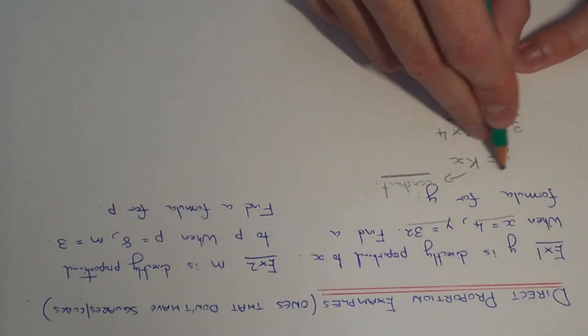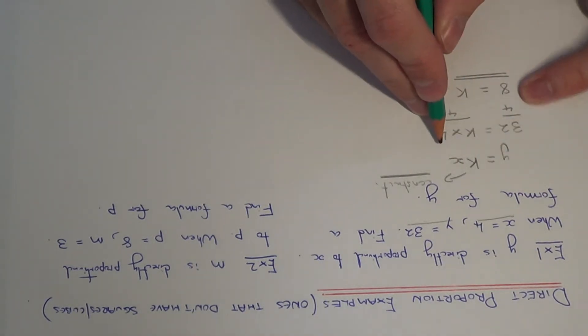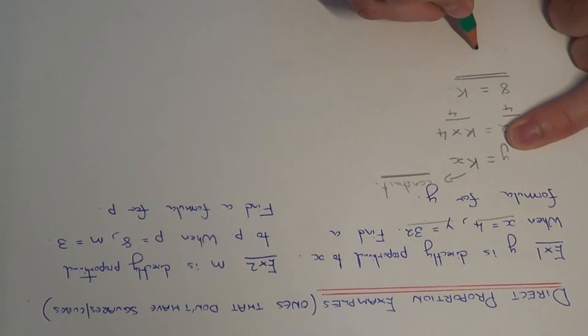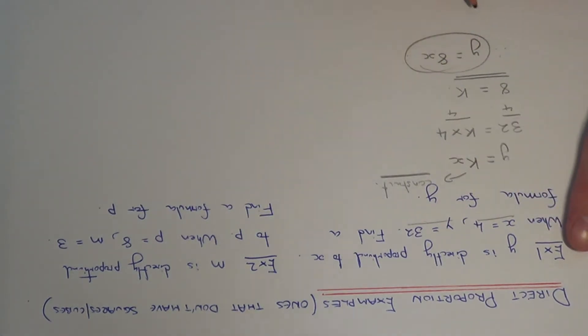So once we've had k now, we just need to write down our final formula. Don't forget to do this. So it's y equals 8x. And this is our formula connecting y and x.